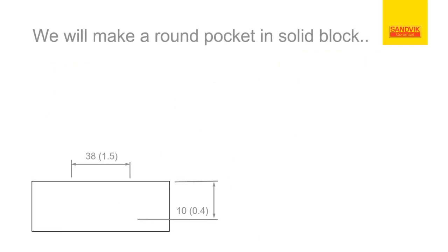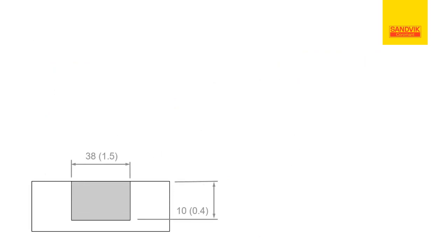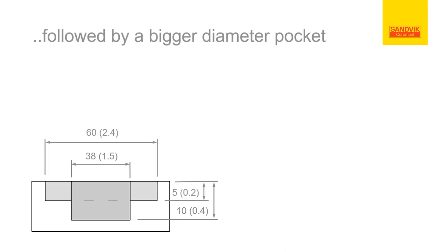The features we intend to make is a narrow round pocket in a solid steel block, and a bigger diameter pocket using the first cavity as a starting hole.